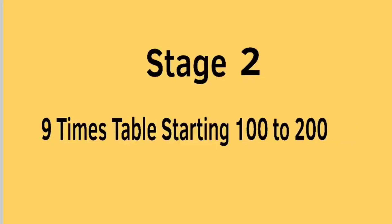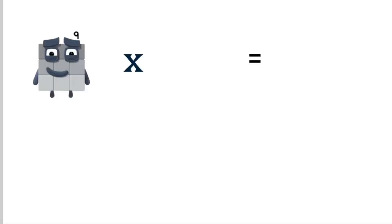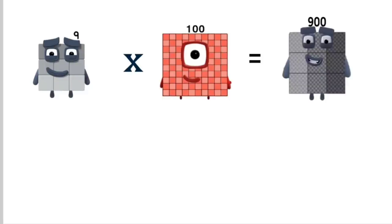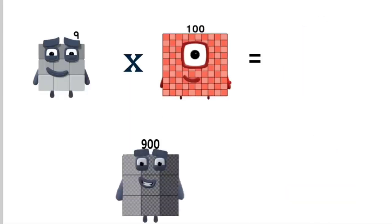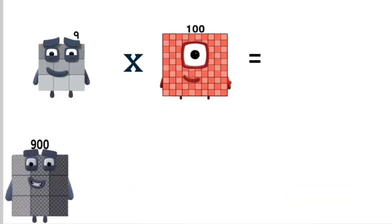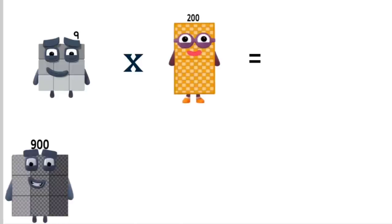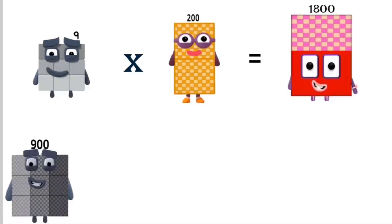Stage 2. 9 times 100 equals 900. Times 200 equals 1,800.